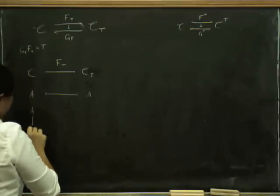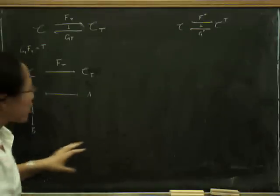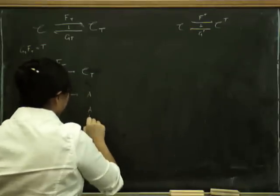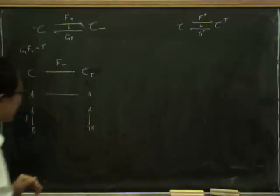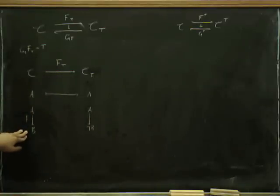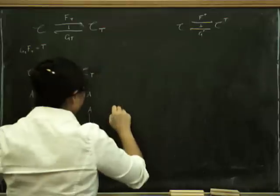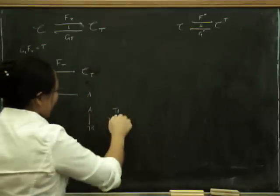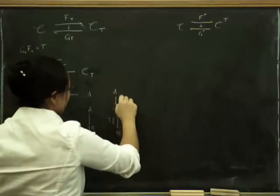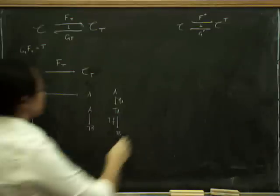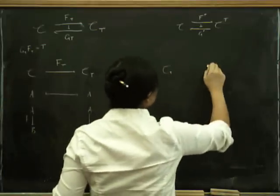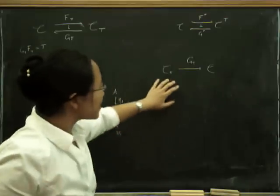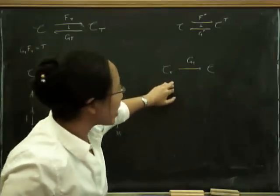On morphisms, F_T takes a morphism a → b and sends it to a morphism a → b in the Kleisli category, which is actually a morphism a → Tb in the underlying category. To get a morphism a → Tb, our only hope is to compose the morphism with T and then stick η at the beginning. That's how you define the functor in that direction.